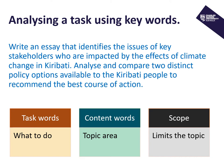Back to our example essay topic, thinking about task words, content words, and scope. Our first task word is 'write an essay.' Our first content word is 'issues' — we're writing about the issues or problems associated with climate change in Kiribati. And there is scope: we're only being asked to talk about the key stakeholders, the main ones. Small players are not required in this essay. You might like to pause now and see if you can identify any more task words, content words, or scope within this example.